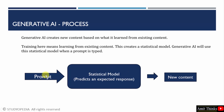When a prompt is typed, this generative AI will use the statistical model to generate new content in the form of text, images, music, video, and others.